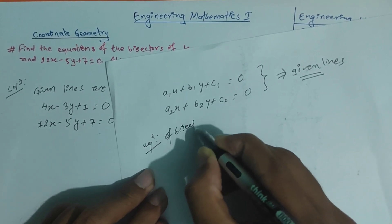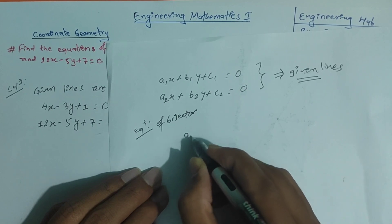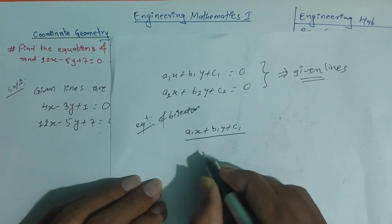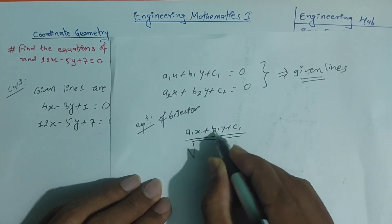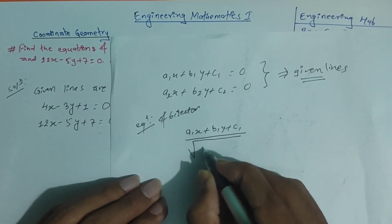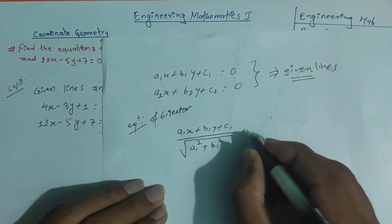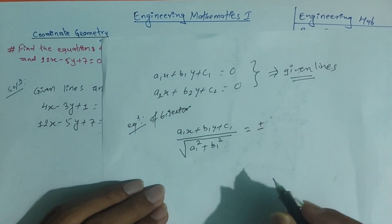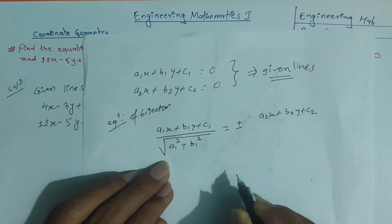Now we divide. The value is: root of coefficient a1 of x and coefficient b1 of y. The equation equal to bisector equation: a1x plus b1y plus c1 divided by root of a1 squared plus b1 squared, equal to plus or minus a2x plus b2y plus c2 divided by root of a2 squared plus b2 squared.